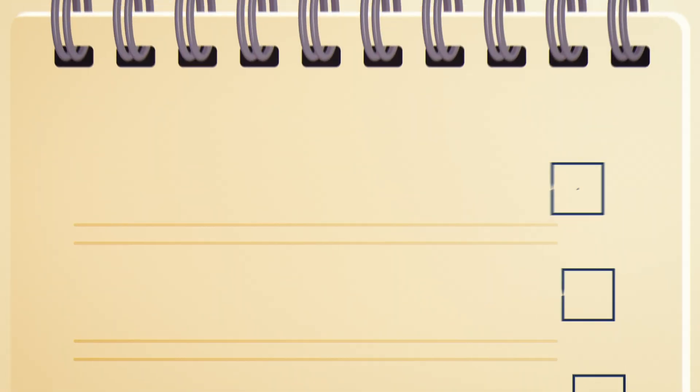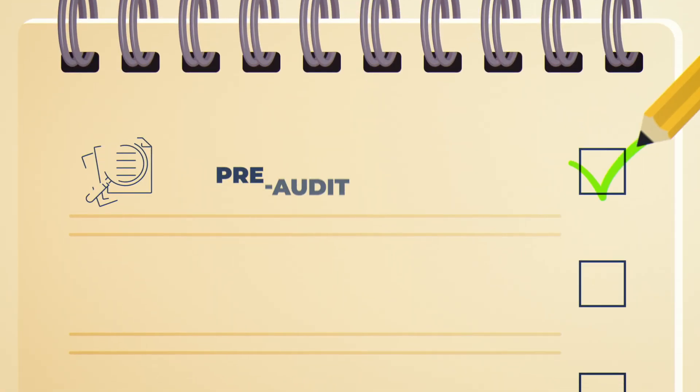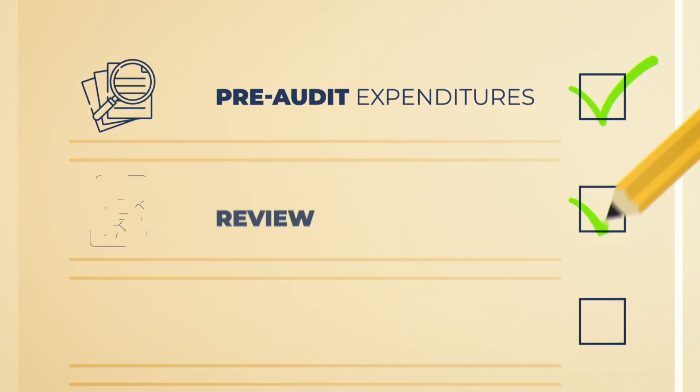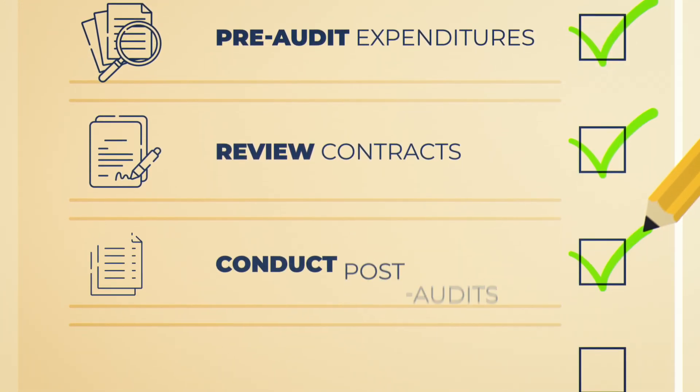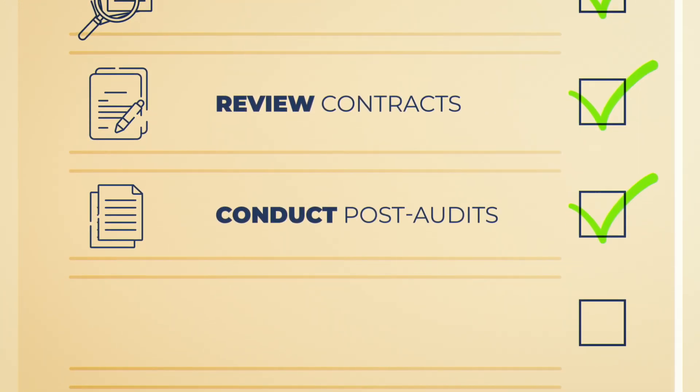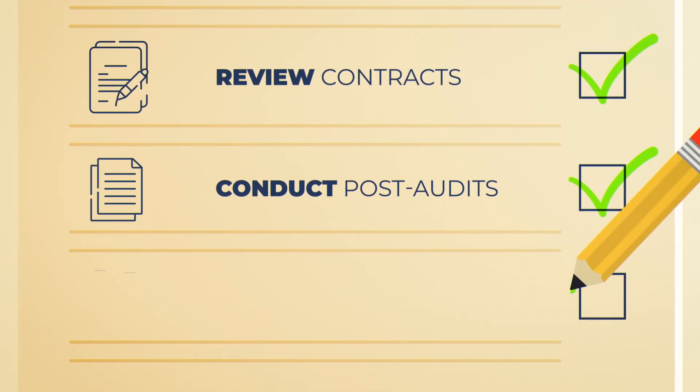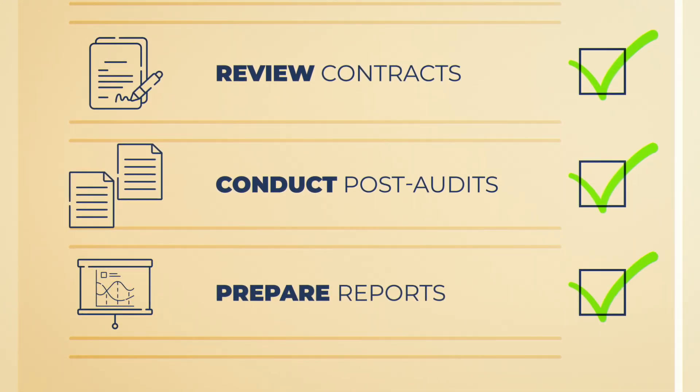Comptrollers promote fiscal accountability by pre-auditing county expenditures before payment, reviewing contracts, conducting internal post-audits to determine if financial controls are sufficient, and preparing reports suggesting improvements.